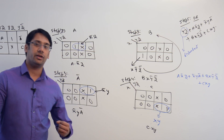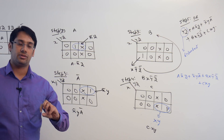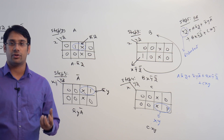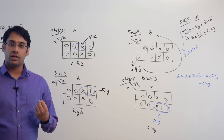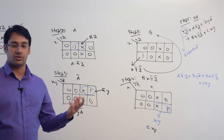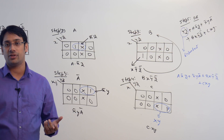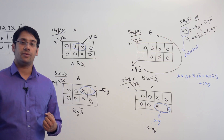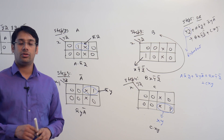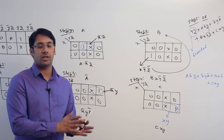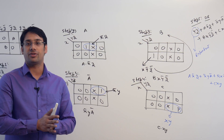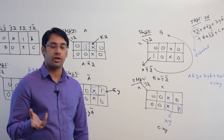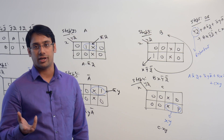Now let us start the combinational circuit. In the case of a combinational circuit, we are going to take the switching boolean expressions and implement them using gates — AND gate, OR gate, NAND gate, NOR gate, XOR, and XNOR gate.